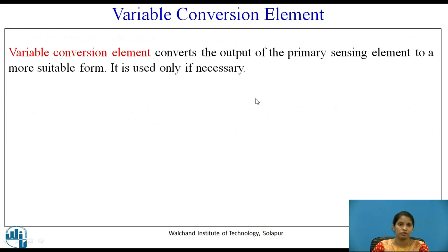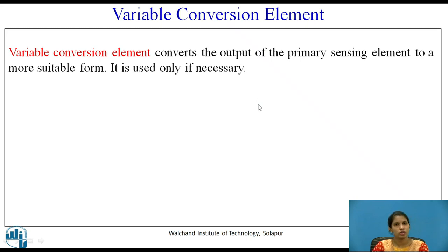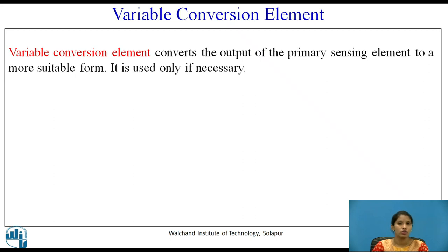Variable conversion elements convert the output of the primary sensing element to a more suitable form. It is used only if necessary. For example, if the input is already an electrical signal, there is no need for variable conversion. It is used only when we need to convert the signal into another form.